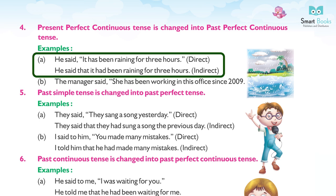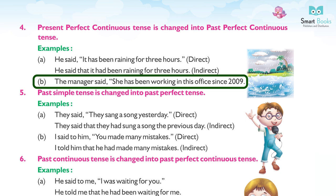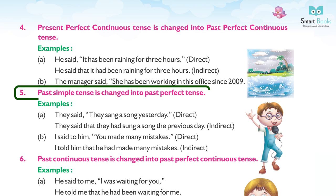Examples for Present Perfect Continuous → Past Perfect Continuous: (a) He said, 'It has been raining for three hours.' (Direct) → He said that it had been raining for three hours. (Indirect) (b) The manager said, 'She has been working in this office since 2009.' (5) Simple Past changes to Past Perfect.